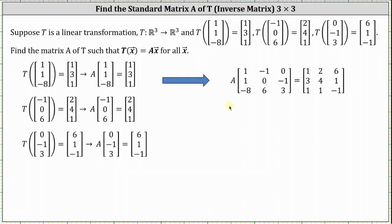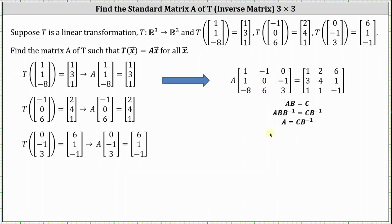Now that we have this matrix equation, we simply have to solve for matrix A to determine the standard matrix or transformation matrix. The current matrix equation is in the form A times B equals C. To solve for matrix A, we need to multiply both sides of the equation by the inverse of matrix B, which gives us matrix A is equal to matrix C times the inverse of matrix B.